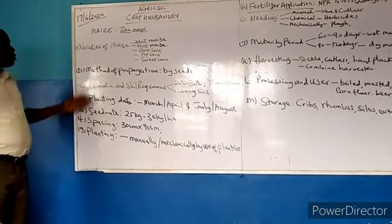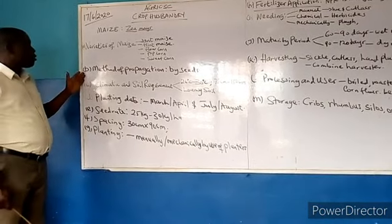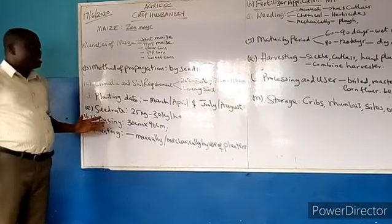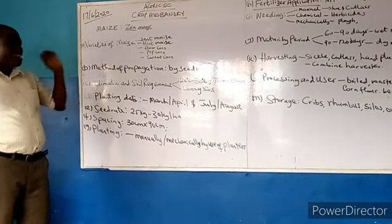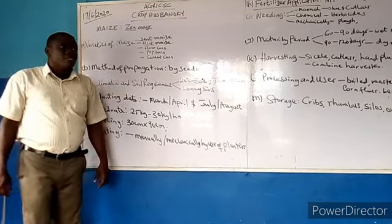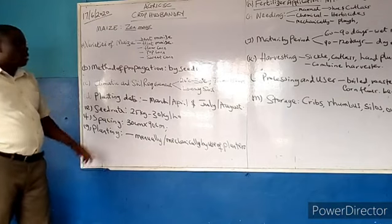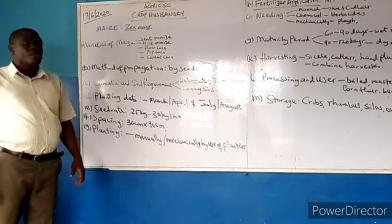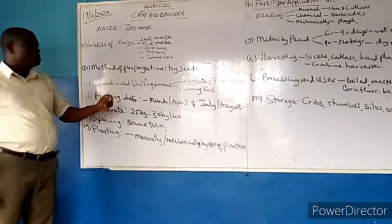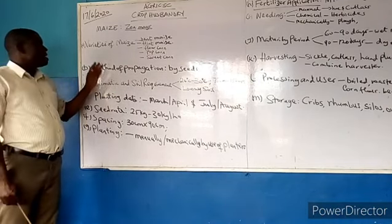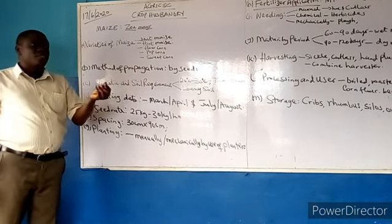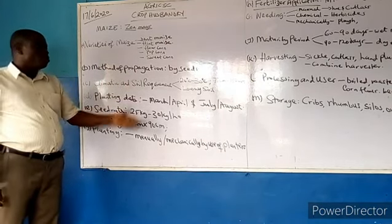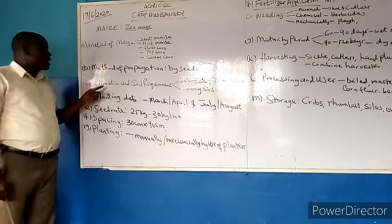We also have here what you call the method of propagation. Maize is propagated by seeds — we can use the words 'maize' or 'corn' and they mean the same thing. You get the dry seeds and you plant them and they grow.